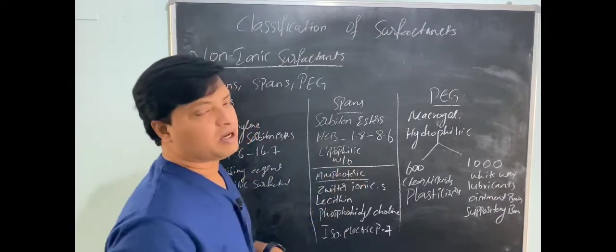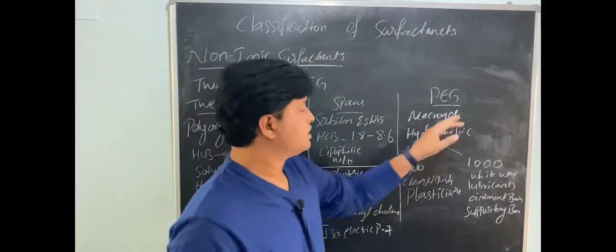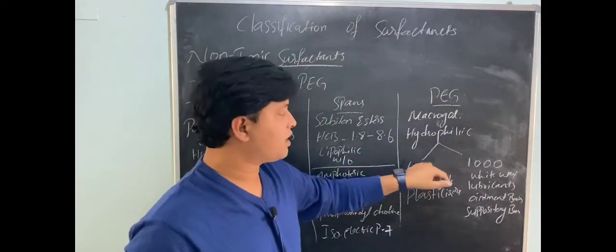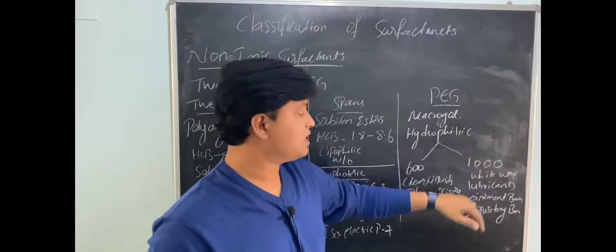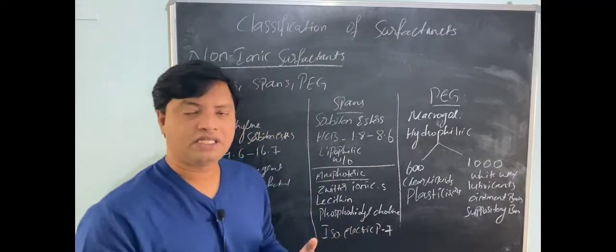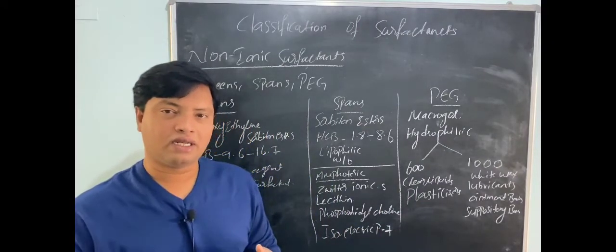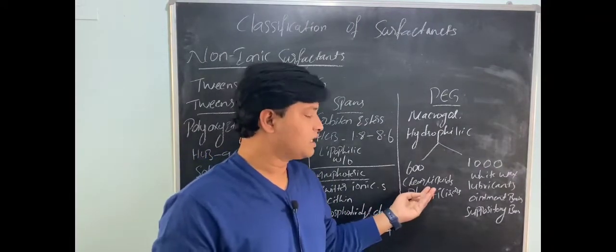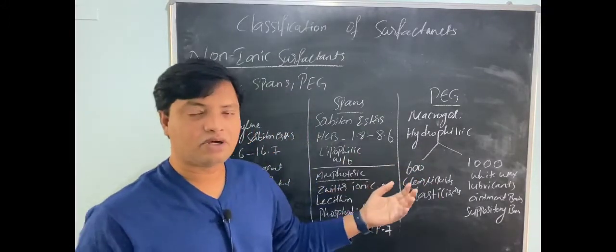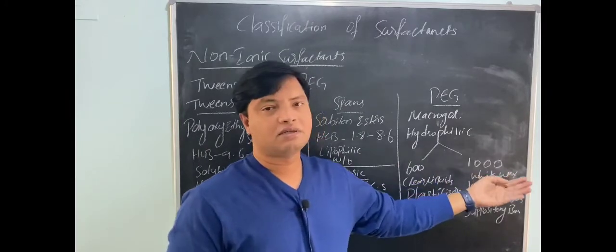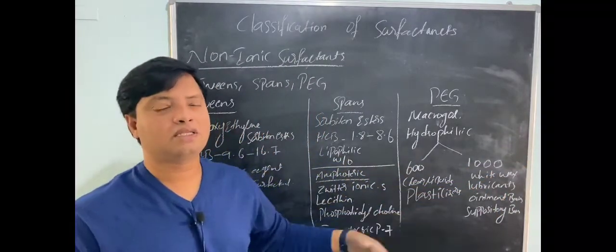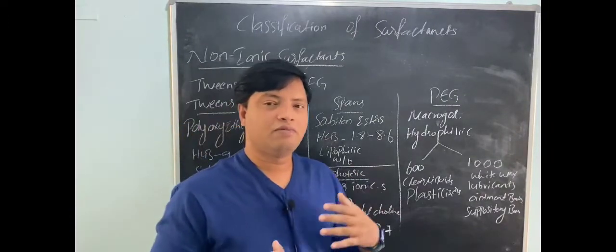Then we have PEGs, polyethylene glycol, also called macrogols. They are hydrophilic in nature. If the number given for the PEG is less like 300, 400, 600, they are clear liquids. If it is between 700-800, they will be semisolid. If it is beyond 1000, it will be solid. As the molecular weight increases, they move from liquidity to semisolid to solids.